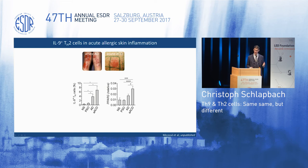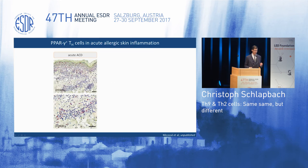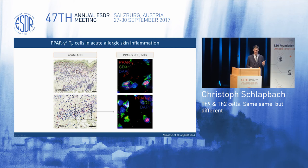PPAR-gamma is expressed by a whole variety of different cells in the skin. To verify whether this PPAR-gamma really comes from the T cells, we did immunohistochemistry. Yes, there are many different cells with PPAR-gamma expression in their nucleus, but when you look at infiltrating cells, there are quite a few cells expressing CD4 and CD3 — and therefore considered T helper cells — that express PPAR-gamma in these acute inflammatory, type 2 mediated skin diseases.